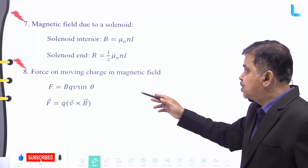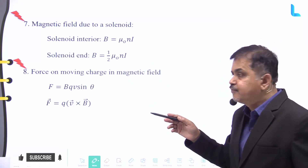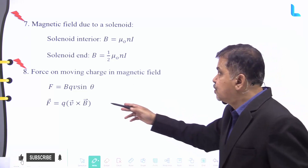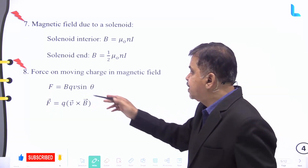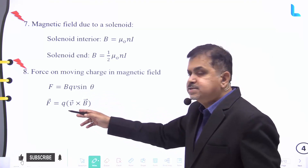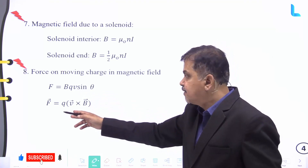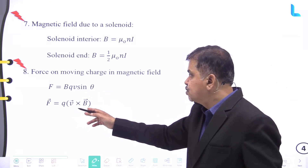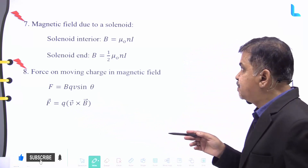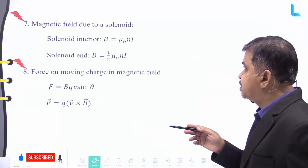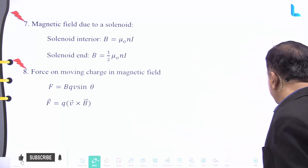The force on a moving charge in a magnetic field is given by F equal to qvB sine theta. In vector form, F equals q times vector v cross vector B.